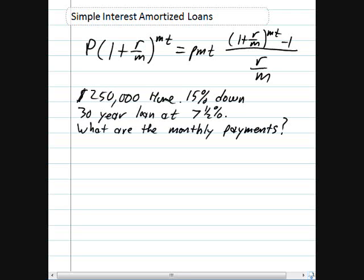Let's look at an example. Suppose you want to purchase a $250,000 home and you have 15% as a down payment. You're going to take the balance of the loan as a 30-year loan at 7.5%. What are the monthly payments you will make on this loan?